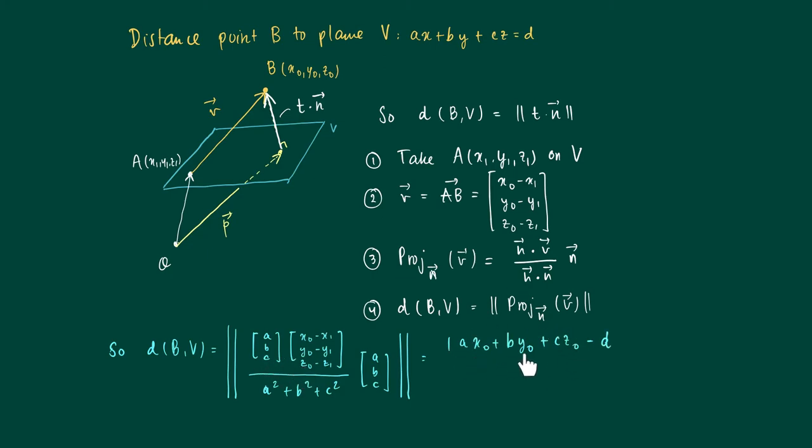And a times x1, b times y1, and c times z1. Since A belongs to the plane, it should equal d. What is remaining is the square root of a squared plus b squared plus c squared, so basically the length of the normal vector.